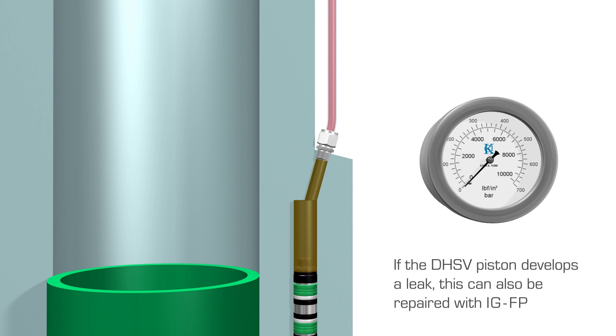If the DHSV piston has a leak or it develops in time, this can also be repaired with the IGFP. IGFP will keep moving down until it reaches the leak path. Again, pressure will rise as the leak path is isolated.